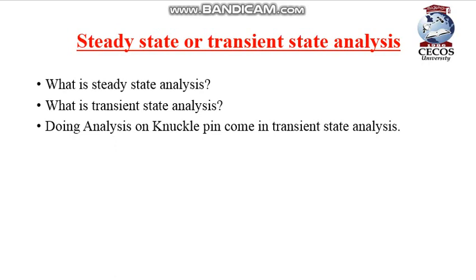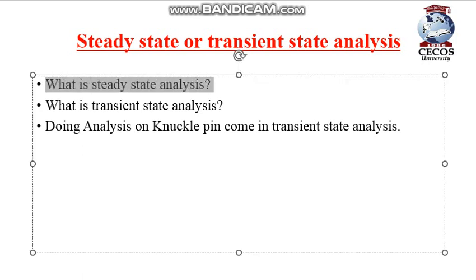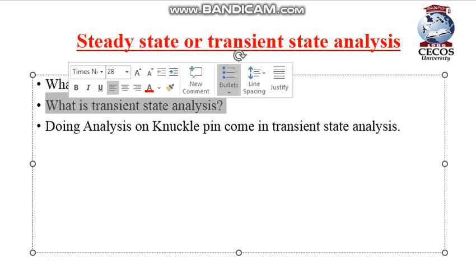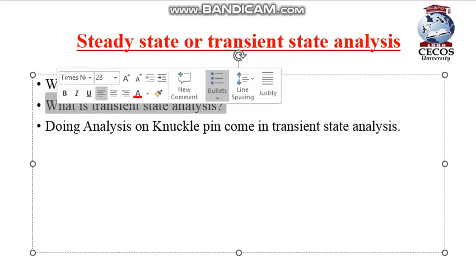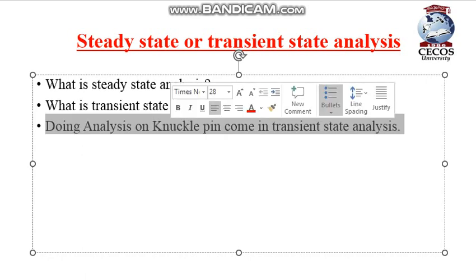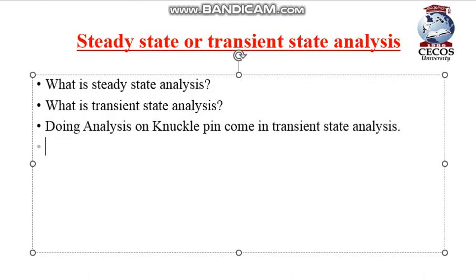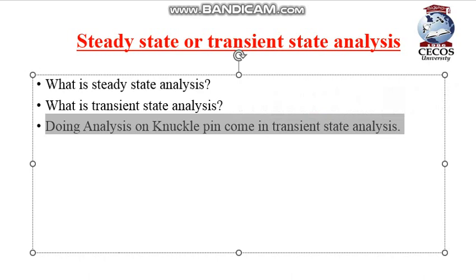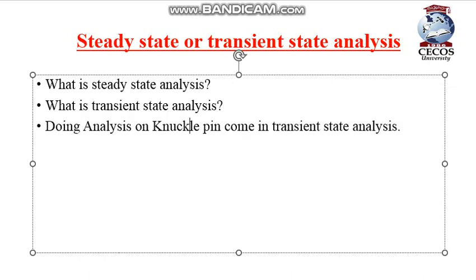Here we define whether our analysis is steady state or transient state. In steady state analysis, the part is stationary and the force on it is constant. In transient analysis, the part is moving and the force is variable. Since the force on the knuckle pin changes from point to point, the analysis for our knuckle pin is a transient state analysis.